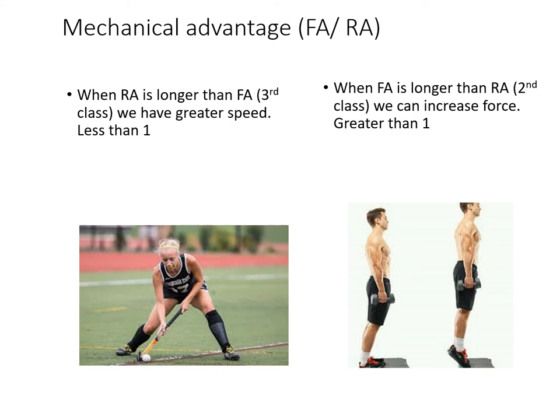There's a formula to quantify the mechanical advantage of a lever — to determine whether it will generate greater force or greater speed. Extending the leg for a soccer kick and choosing a longer bat both increase the resistance arm. Their mechanical advantage is for speed, because we're deliberately manipulating the lever to make it as long as possible so the resistance is furthest from the axis.